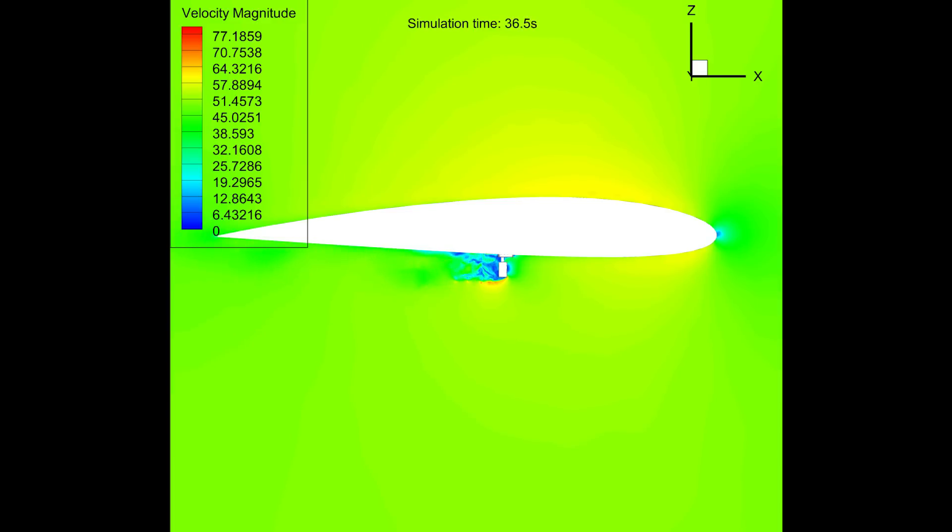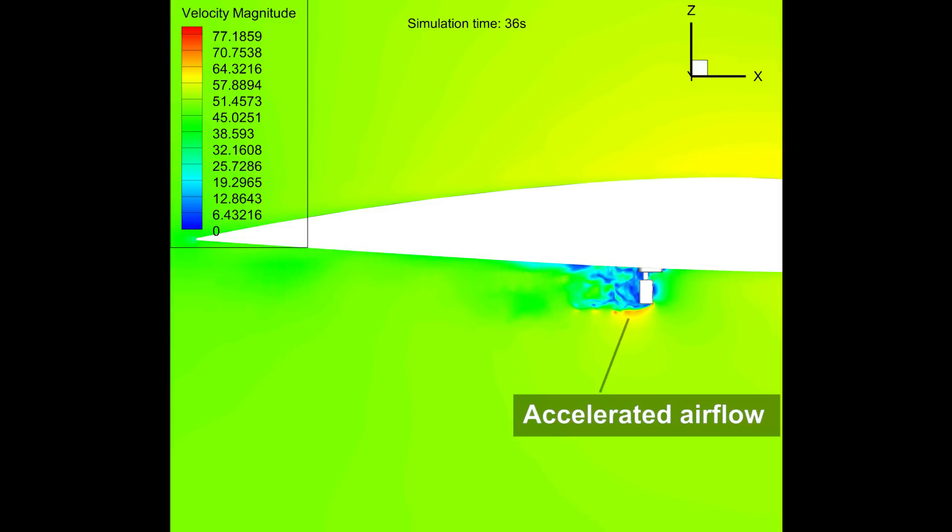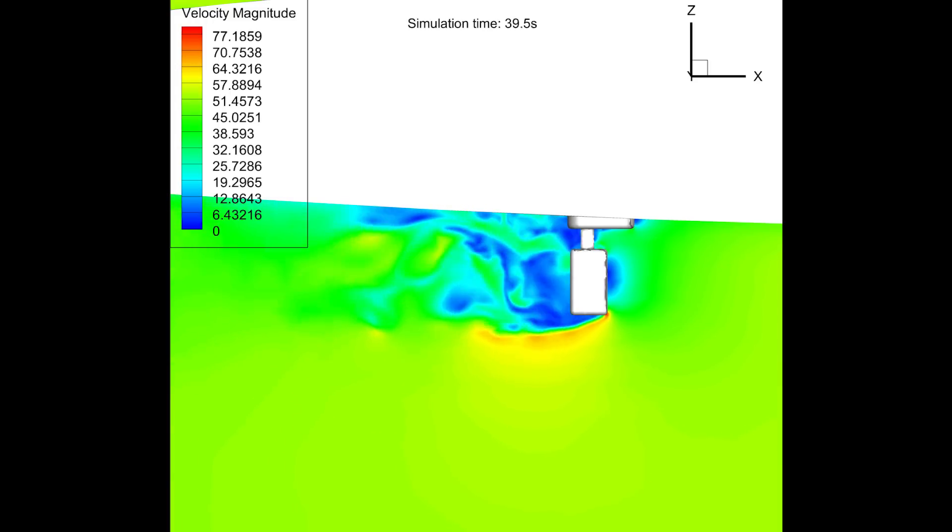But now let's have a look at the results. This clip shows velocity in a slice cutting right through the camera. You notice the stagnation point at the leading edge and right in front of the camera. Furthermore, you can see that the flow is accelerated around the camera and the wake space is located just behind the cam.